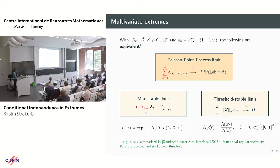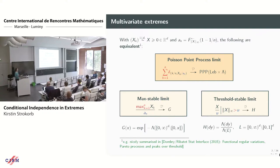There are many different equivalent characterizations of this, which are quite scattered across the literature and sometimes very hard to find in a single reference. One reference I quite like is Domry and Ribatte's Statistical Interface, where they have accumulated quite a lot of these characterizations together and extend this also to different kinds of Pareto processes.